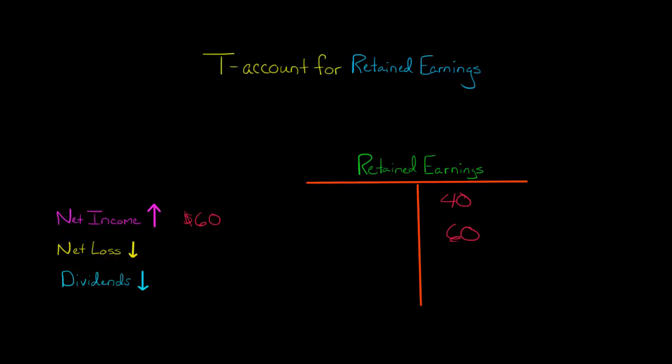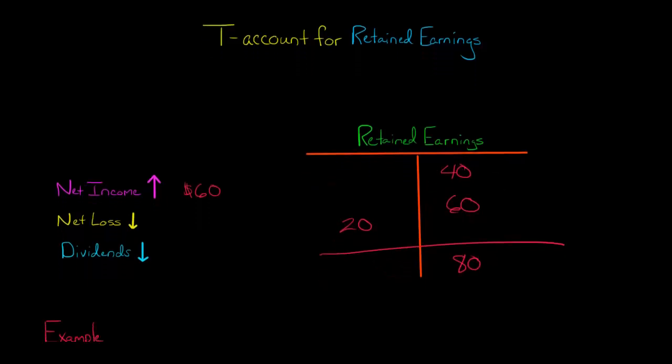And then the dividends of $20, we would have $100 minus $20, so we would have a credit balance of $80 for retained earnings.